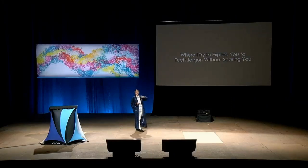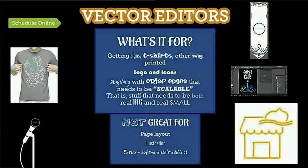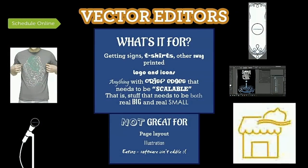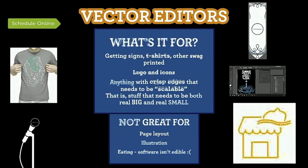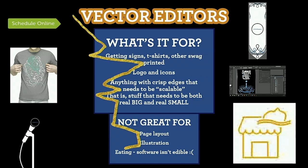Part two — where I try to expose you to tech jargon without scaring you. Wish me luck. We're going to talk about vector editors. This is very ugly — let's get this into PowerPoint and give it a glow up. Again, lots of fonts. It says what it's for: getting signs, T-shirts, and other swag printed, logos and icons — but it bounces all over the place, and as you're reading it you have all these opportunities to just leave. They're switching font again — I'll just leave. So let's get all that unified. There's a lot of bounciness as we're reading because the text is centered — you have to go find the beginning of every single line. It's nonsense.